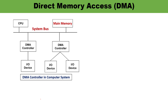Let me tell you how DMA works — what do you mean by 'without the intervention of the CPU'? In this diagram, you can see there is a CPU, a main memory, and a system bus. The system bus is the collection of the address bus, data bus, and control bus. These buses always retain with the CPU and the address bus is used to carry addresses so data transfer happens. The DMA controller provides an interface between the system bus and the input-output device.